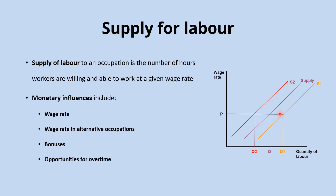We could also look at opportunities for overtime. A lot of additional pay can be gained from working overtime, which is often paid at a higher rate than the standard wage rate. If there are more opportunities for overtime, that's likely to shift the whole supply curve for labour to the right.